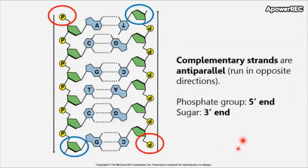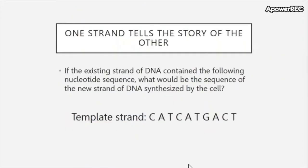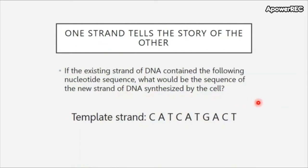The phosphate group is on the 5-prime end and the sugar is on the 3-prime end. One strand tells the story of the other, and this provides a mechanism for copying one strand into a new strand. If the existing strand of DNA contained the following nucleotide sequence — CAT CAT GACT — what would be the sequence of the new strand synthesized by the cell? Take a moment and figure out what bases you would write for the other strand.